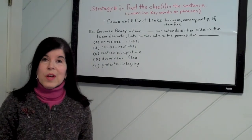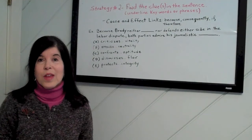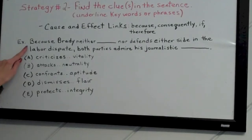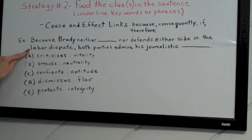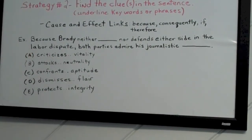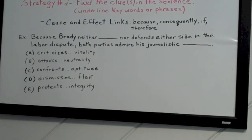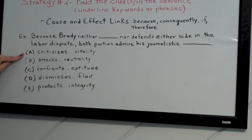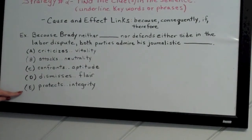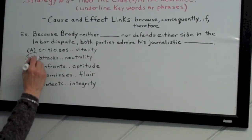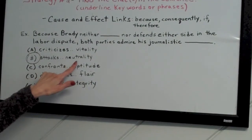Another important clue is cause and effect links — words like because, if, therefore, yet, and rather. For example: 'Because Brady neither blank nor defends either side in the labor dispute, both parties admire his journalistic blank.' Brady doesn't take sides — he's on the fence — and both parties admire how neutral he is. Looking at the choices — criticizes/vitality, attacks/neutrality, confronts/aptitude, dismisses/flair, protects/integrity — choice B works: Brady neither attacks nor defends either side, and they admire his neutrality.